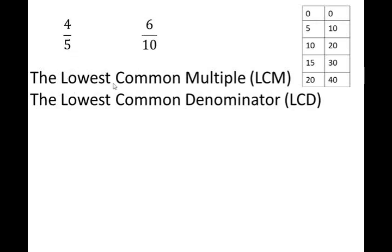However, we need to look for the lowest common multiple. We could use any common multiple, but it's easier to work with smaller numbers, especially when calculating, multiplying or dividing. Here we notice that the common number is 10 and it's also the lowest common multiple. So we will use 10 as our lowest common multiple. Because we need our denominators to have the same value, this lowest common multiple — also known as LCM — now becomes my lowest common denominator. I need to change my denominators so they have the same value, so my lowest common multiple is also my lowest common denominator.